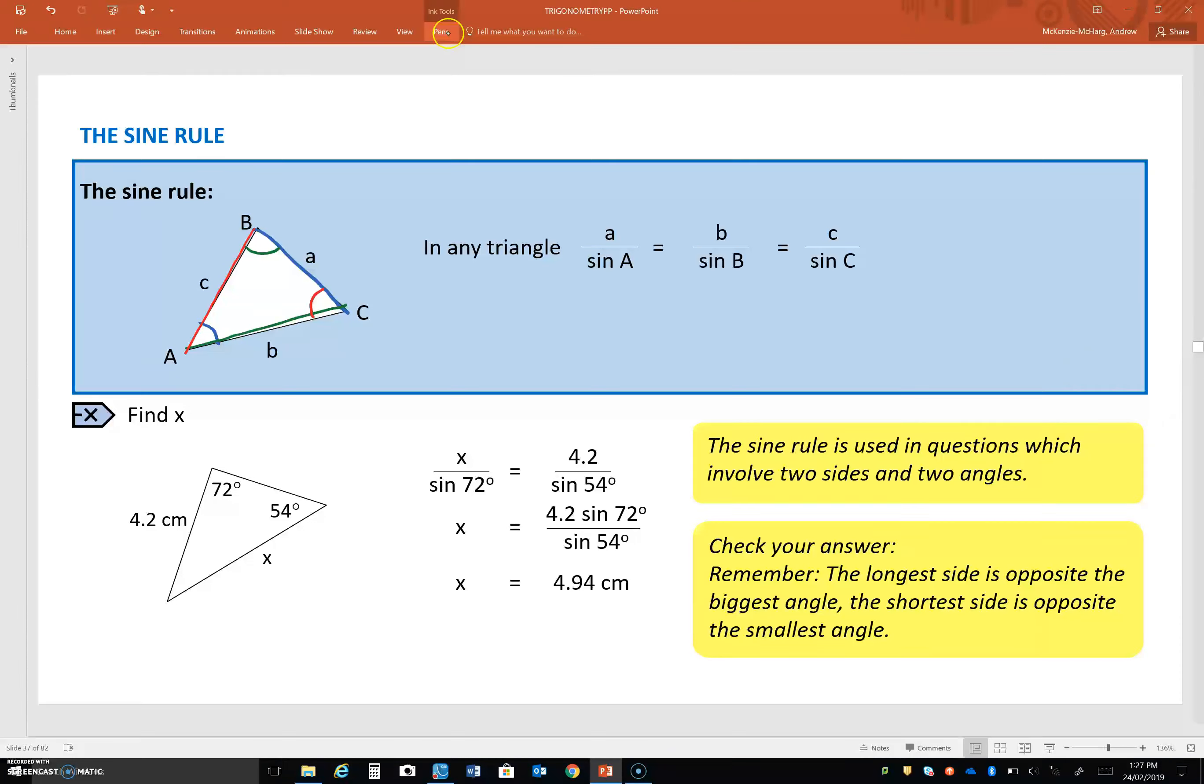You can flip the sine rule as well, which is useful for finding unknown angles. So, really, this one is for a side length. So, I'll just write that first. So, we use the rule, as it looks like here, for side lengths.